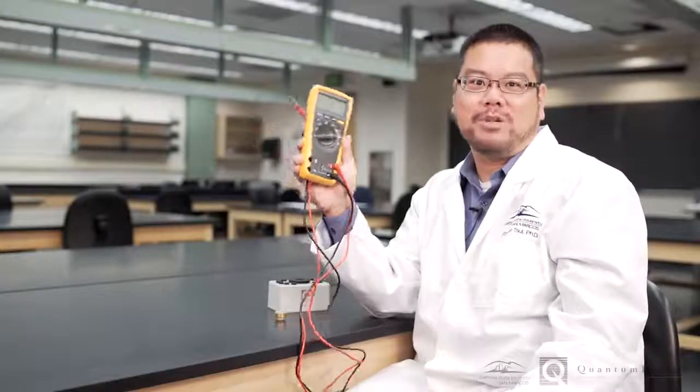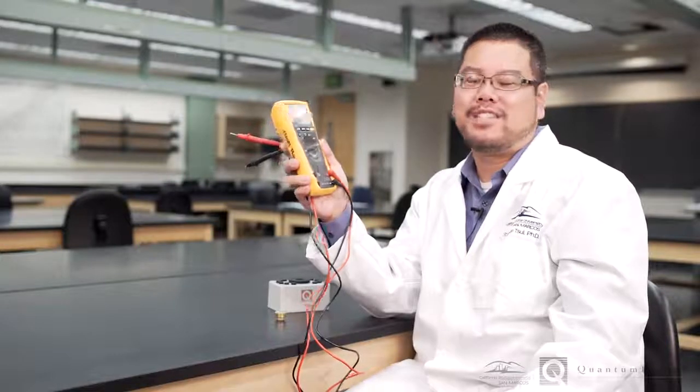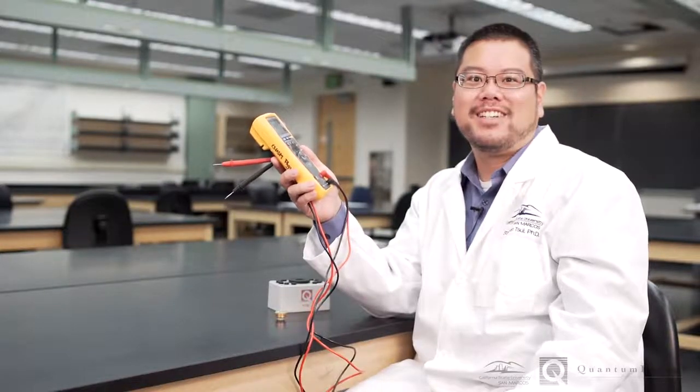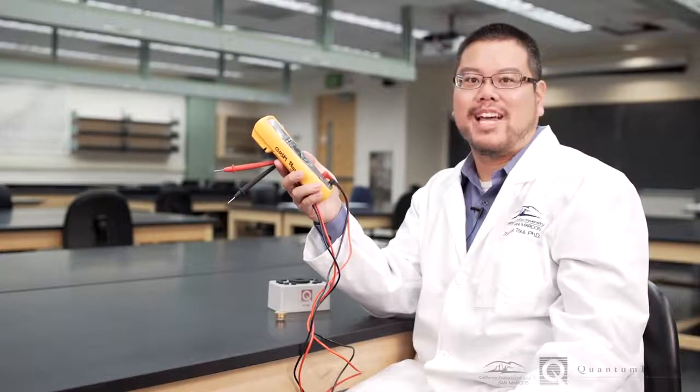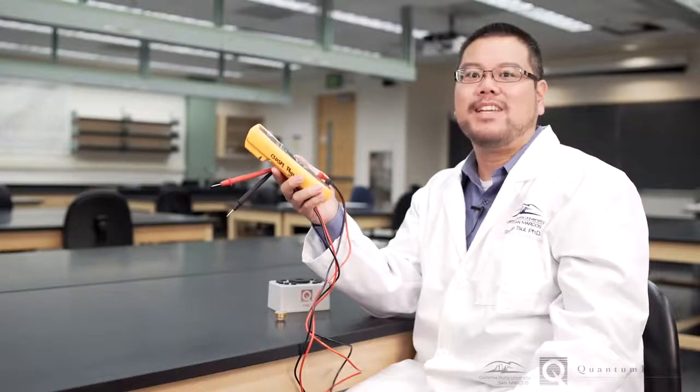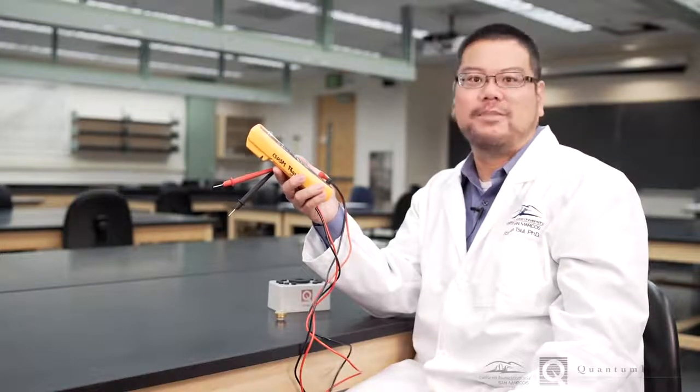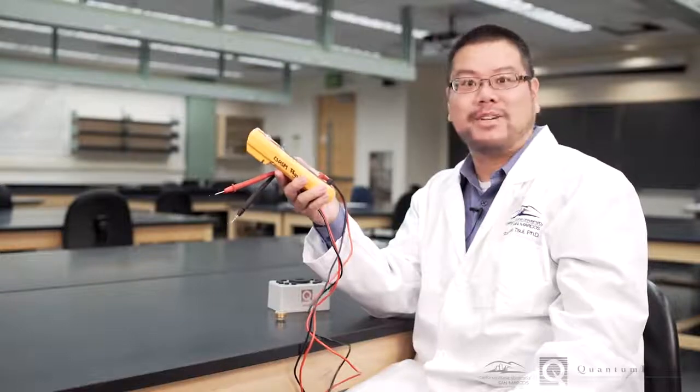You may be familiar with the use of a handheld multimeter, which we typically use to measure resistance, current, or voltage. It's a great tool for spot-checking problems around the lab or even in your home, but it's not necessarily the best instrument for characterizing materials. Allow me to demonstrate why.